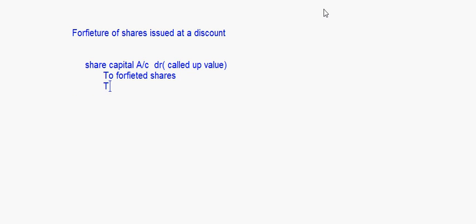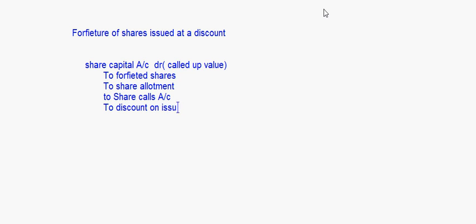The journal entry for forfeiture of shares issued at a discount will be: Share Capital Account debit with the face value, to Forfeited Shares with the amount received, to Share Allotment for the amount not received on share allotment, to Share Calls Account, and then to Discount on Issue of Shares Account - whatever is the discount amount will be credited here.